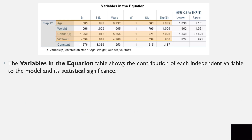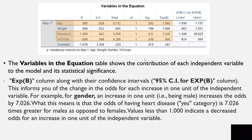The Variables in the Equation table shows the contribution of each independent variable and its statistical significance. Weight was not a significant predictor; however, VO2 max, gender, and age were. The Exp(B) column contains the odds ratios: values greater than 1 indicate increased likelihood, values less than 1 indicate decreased likelihood. For gender, an increase of one unit — going from female to male — increases the odds by 7.026, meaning the odds of having heart disease are 7.026 times greater for males than for females. Values less than 1.00 indicate decreased odds for a one-unit increase in the independent variable.